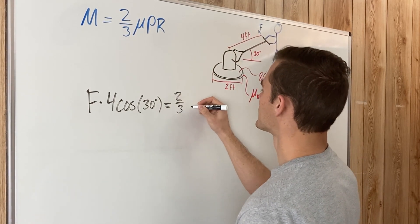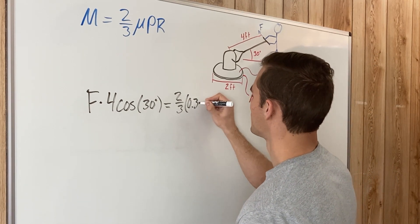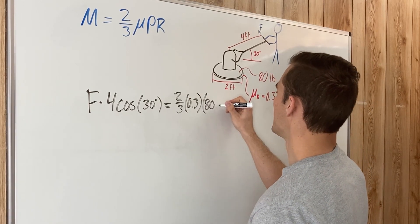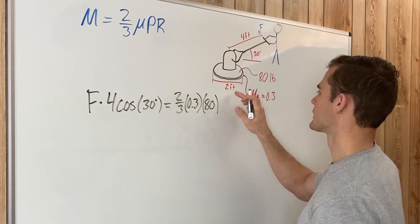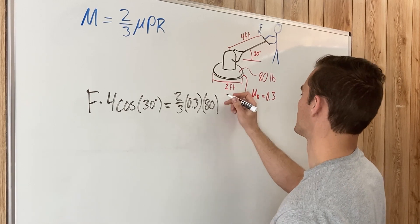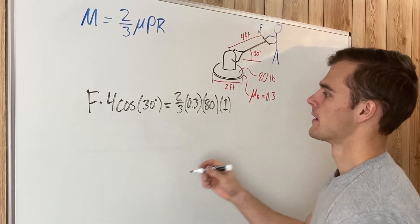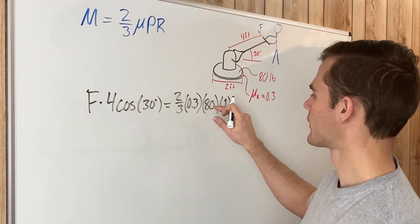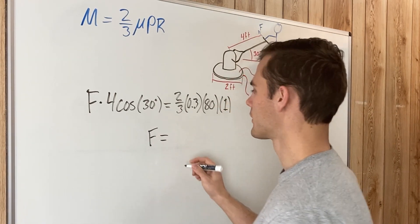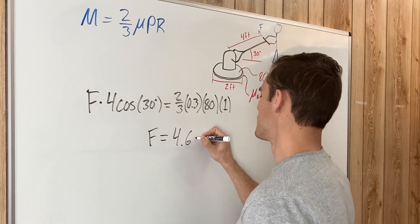Two-thirds times this coefficient of kinetic friction which is 0.3, and then multiply that by P which is 80, and then our radius. The radius is half of 2 so that's just 1. We'll divide the 4 cos(30°) over to this side and then we've solved for F. Plug all that into your calculator and you get that F is 4.62 pounds.